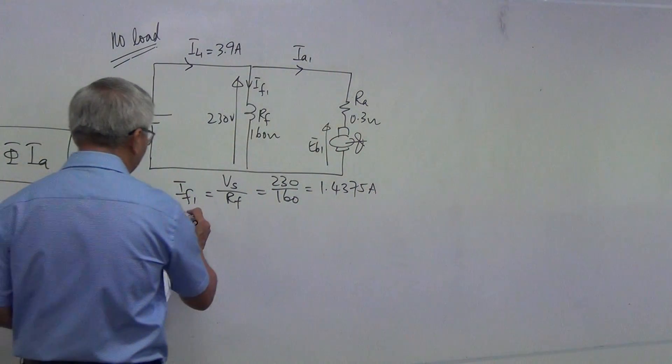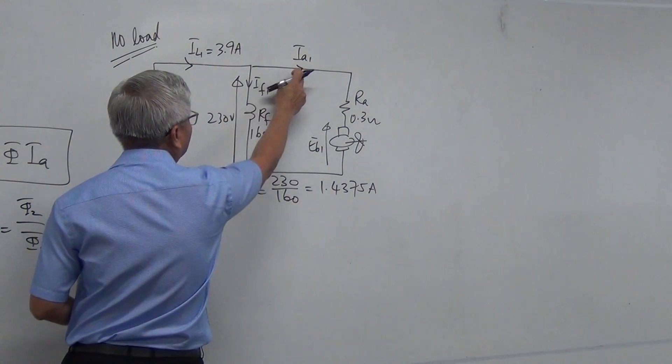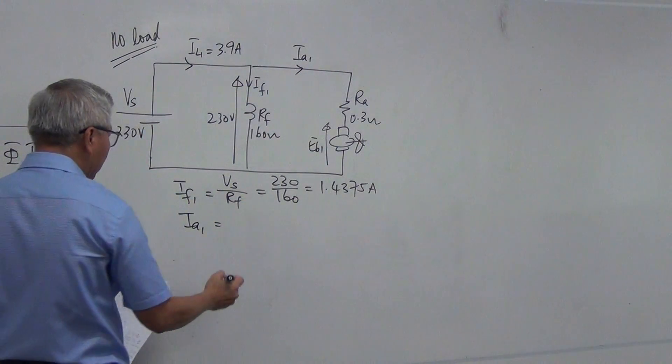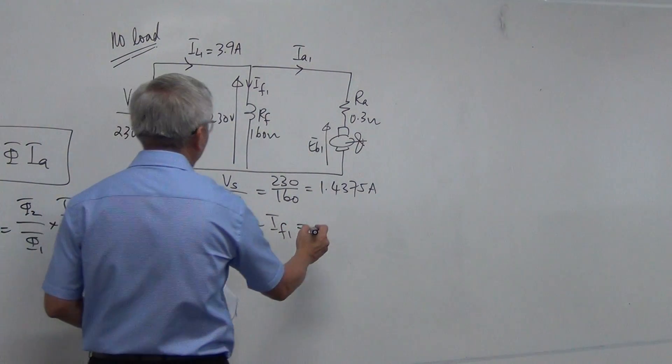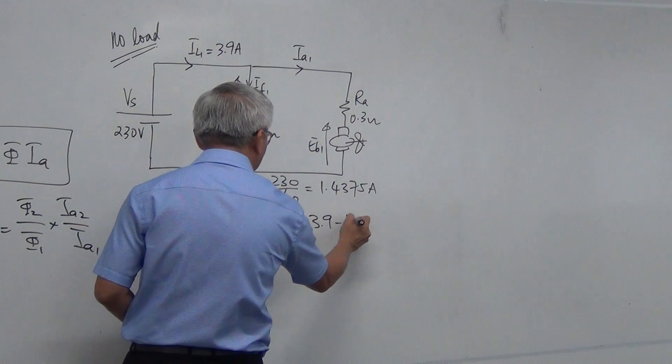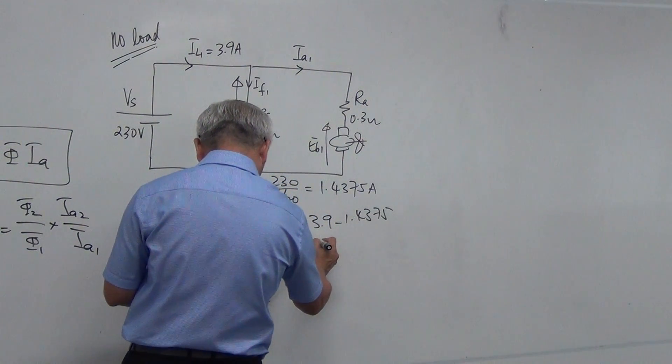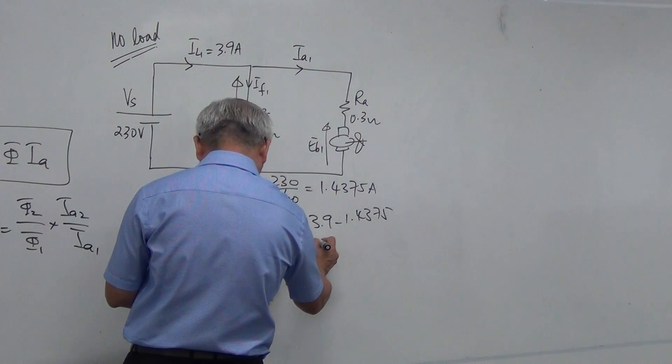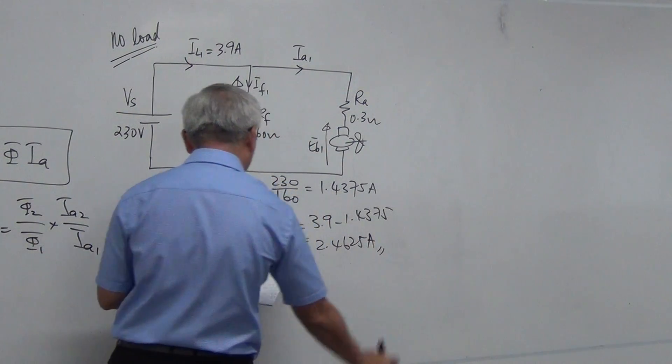Then, I find Ia1. If I know this current and this current, can I get this current? Yes, by Kirchhoff's current law, it says IL1 minus IF1. So it is 3.9 minus 1.4375, and I get 2.4625 ampere.